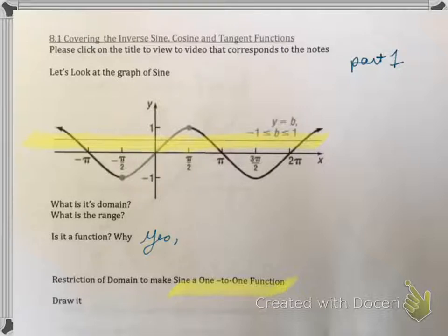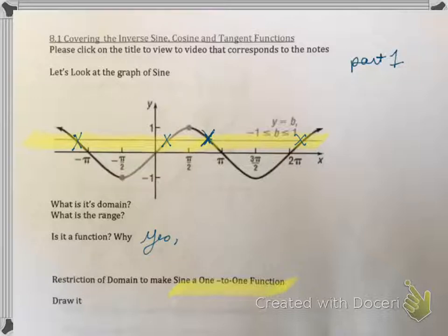The horizontal line test says if it touches at more than one point — do you guys see where I put the x's? — then that's not good. That means it flunks the horizontal line test and it touches more than once. So at that y value, for instance when y equals one half, we see it touched one, two, three, four, and that's just on the window that we saw. I'm going to go ahead and erase that highlighter and those x's and show you what we can do.